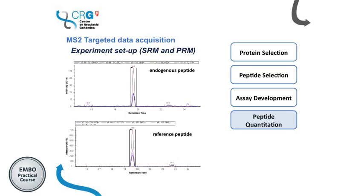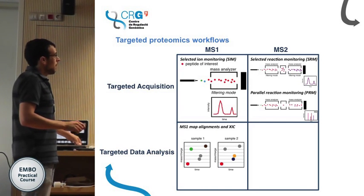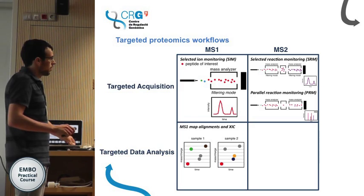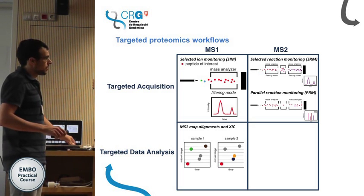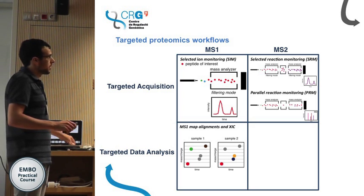Once the assay is set up, the next step is peptide quantitation. An endogenous peptide from the sample and the same peptide monitored with a spiked reference peptide are compared. For quantitation we integrate the area under the curve and compare the endogenous signal with the reference signal. We have reviewed MS1 targeted acquisition, MS2 targeted acquisition, and MS1 targeted data analysis. Now there is the last gap — MS2 targeted data analysis.